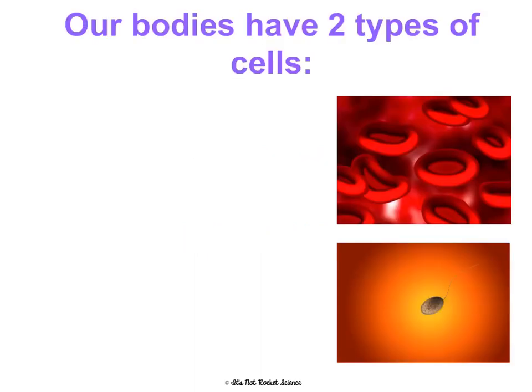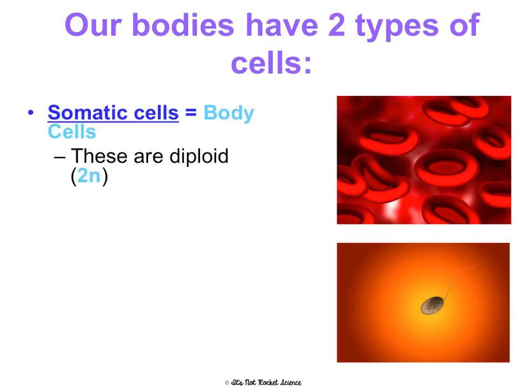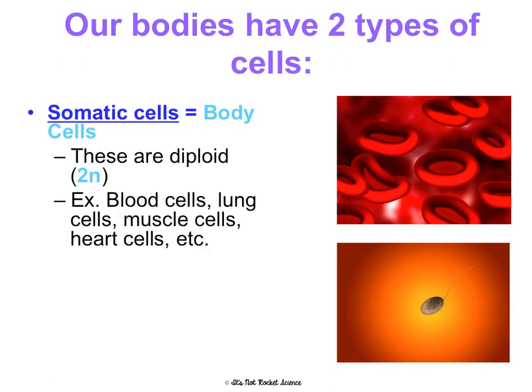Our bodies have two types of cells in them. You have somatic cells, which is another word for body cells, and these are diploid, which means 2N, which means they have two sets of chromosomes in them — the set that came from your mom and the set from your dad. Diploid is just complete — that's all of your DNA. Examples of somatic cells are blood cells, lung cells, muscle cells, heart cells, etc.